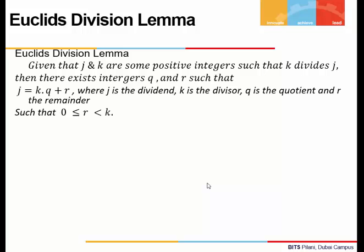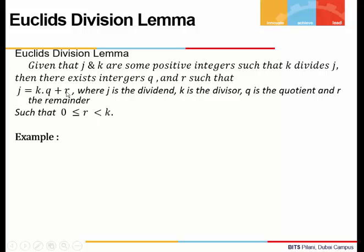Coming to Euclid's Division Lemma: when we divide any given integer j by another integer k, we can write it as j equals k times q plus r, where j is the dividend, k is the divisor, q is the quotient, and r is the remainder. One thing to remember: the remainder is always less than the divisor, it can be 0, and it is always non-negative.